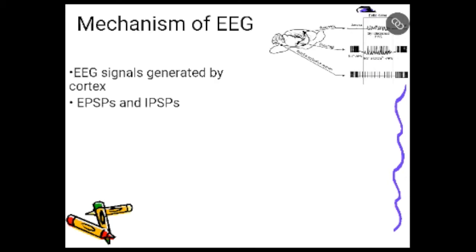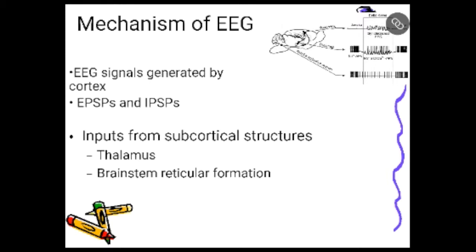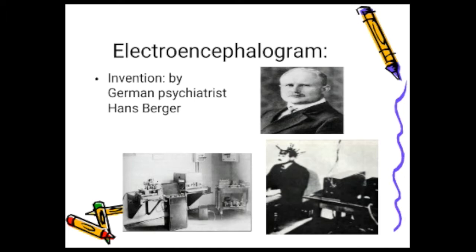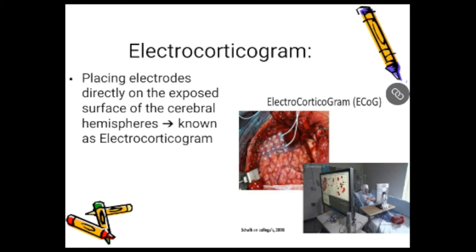Mechanism of EEG: EEG signals are generated by the cortex — currents in the extracellular space generated by summation of EPSPs and IPSPs. These EPSPs and IPSPs get their inputs from subcortical structures, namely the thalamus and brainstem reticular formation. EEG was invented by German psychiatrist Hans Berger. Another terminology is electrocorticogram, a similar record obtained by placing electrodes directly on the pial surface of the cerebral hemisphere, performed during neurosurgery.